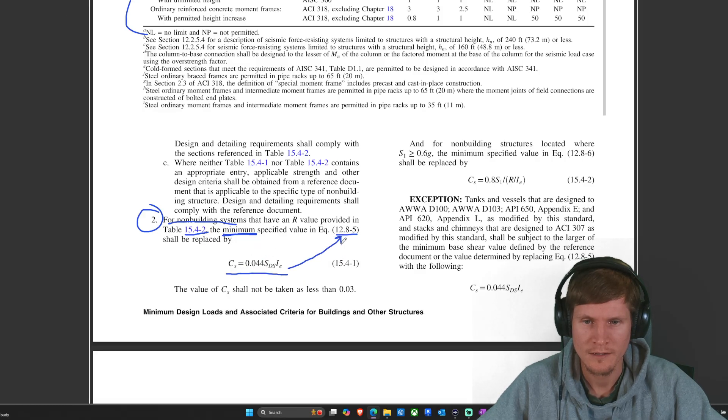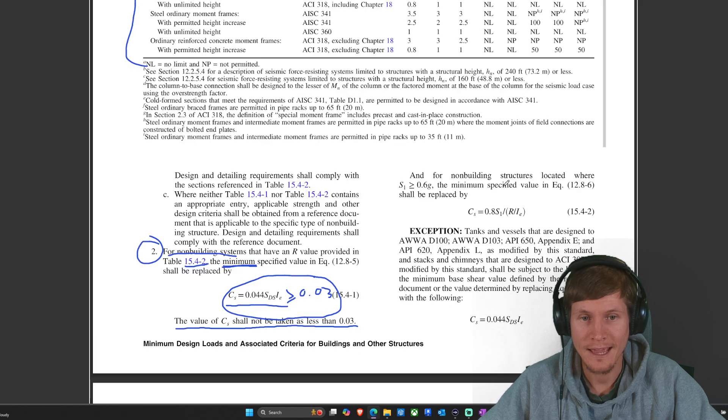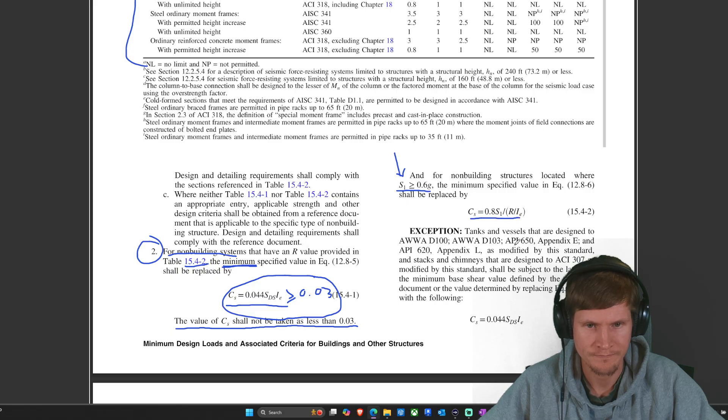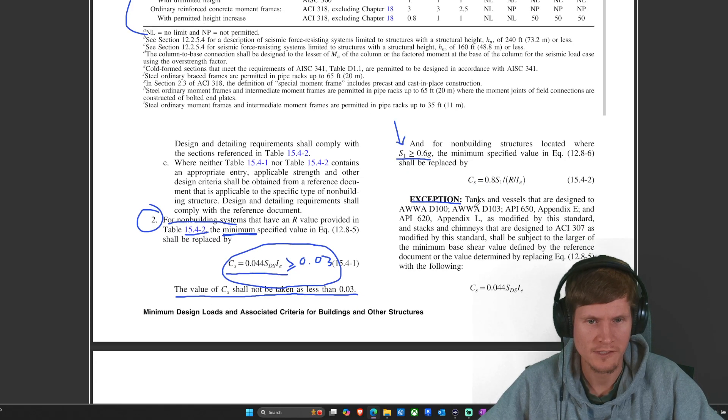So the lower bound value. I wish they would write like Cs min. That's what I do in all of my calculations. And then when you have an upper bound, I write Cs max. And I compare my value C sub s, make sure it falls in between and then I can proceed forward. But they don't do that. So just keep an eye about the words that they're saying as it relates to the equation. It's replacing the one that's back in chapter 12, which is seismic design requirements for building structures. And they also say C sub s shall not be taken less than 0.03. So let's grab onto this. But let's keep reading because I see a couple other equations here. So we don't want to just jump the gun.